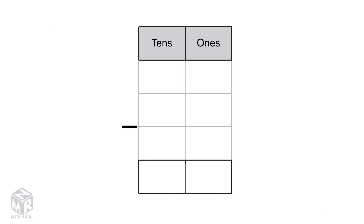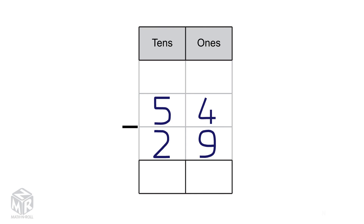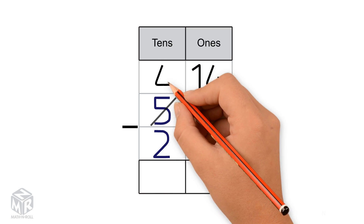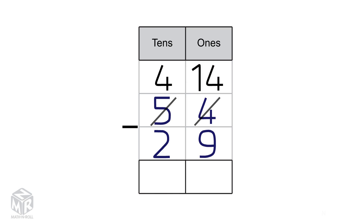Let's try another example: 54 minus 29. We can't subtract 9 from 4, so we regroup one 10 as 10 1s. Now we have 14 1s. We cross out the 4 and put 14 on top. We also have four 10s, so we cross out the 5 and put 4 at the top. Subtract the 1s: 14 minus 9 equals 5.